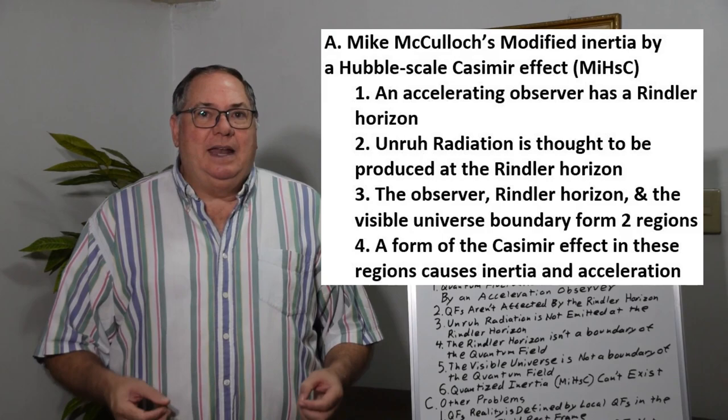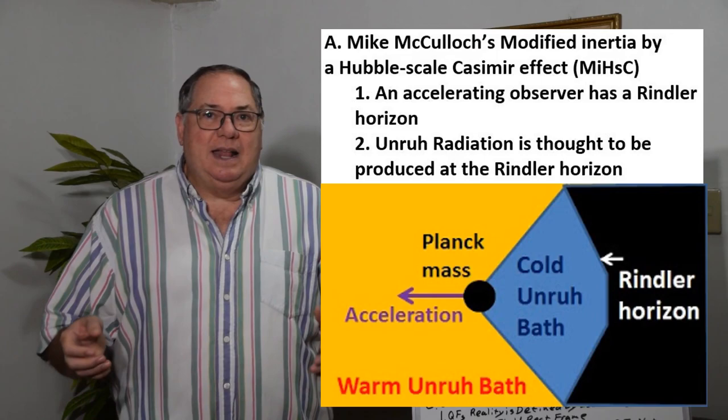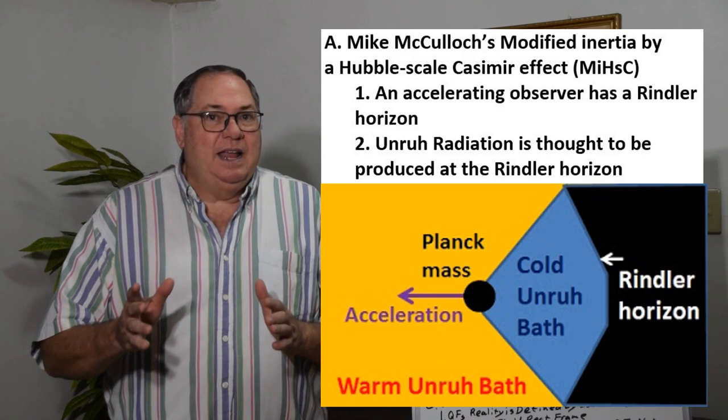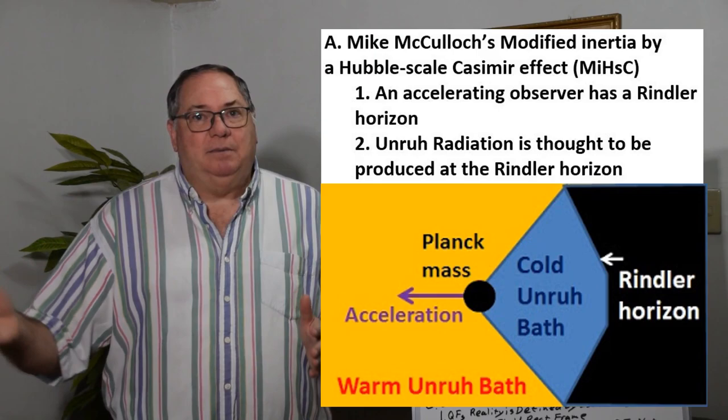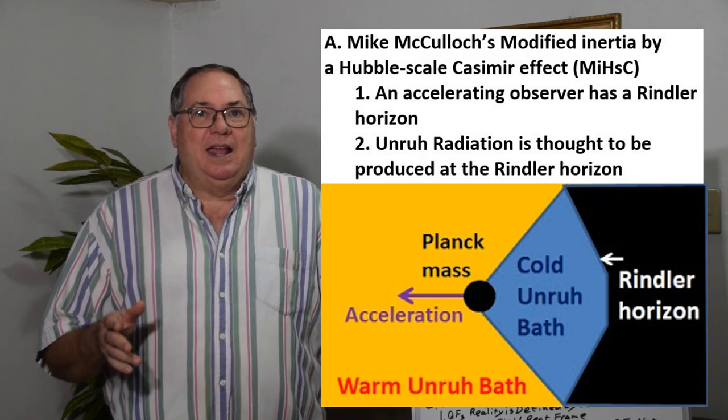In this, he assumes that an accelerated observer has what they call a Rindler horizon. That's pretty simple - if you start accelerating continually, indefinitely, you'll eventually approach the speed of light. So it's possible if you have a photon emitted...